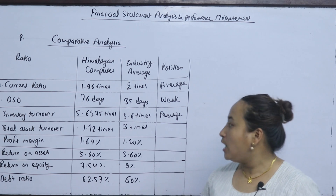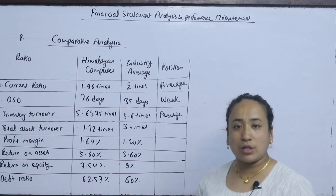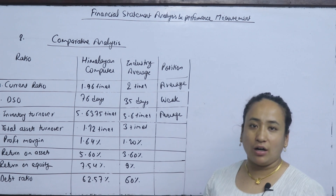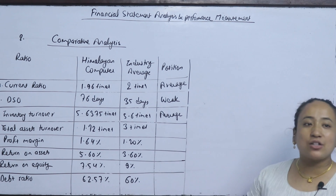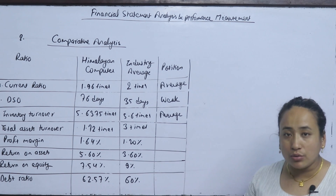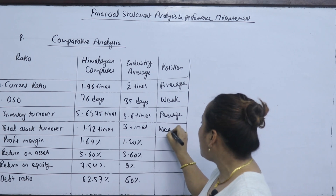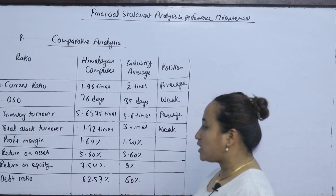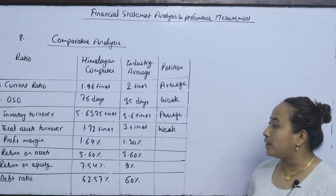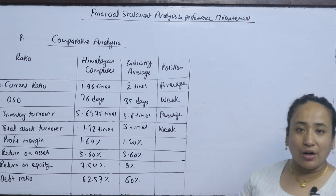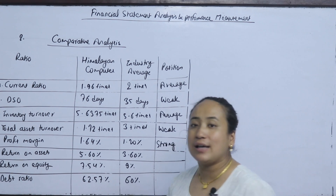The total assets turnover ratio is 1.72, which gives us a little above average — a slightly weak position. The profit margin industry average is higher; therefore, the company has a strong position in terms of profit margin relative to the organization.